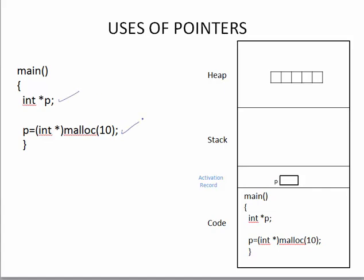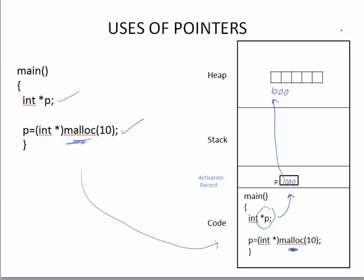Here I have taken an example where I have a pointer, and using the malloc function I'm allocating 10 bytes of memory in the heap. Once the program is loaded into main memory, the activation record is created with only one variable, P. When the program executes the malloc instruction, memory is allocated in the heap, and the address of that location — let's say 1000 — is stored in the pointer. So the pointer will be pointing to the heap memory, and the program accesses the heap through that pointer.